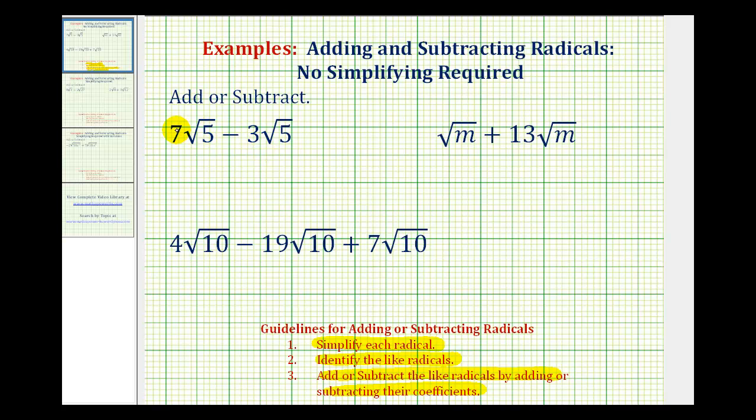And since 7 minus 3 is equal to 4, 7√5 minus 3√5 is equal to 4√5.